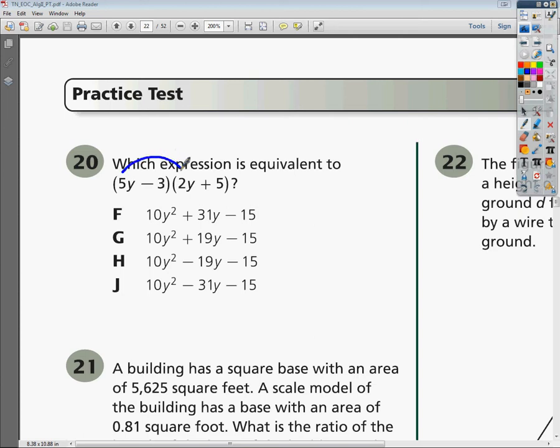We're going to multiply 5y times 2y, and that equals 10y. Now, notice these are both positive numbers, so this is 10y squared.